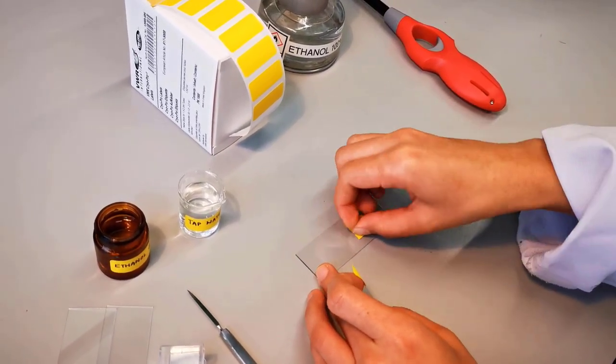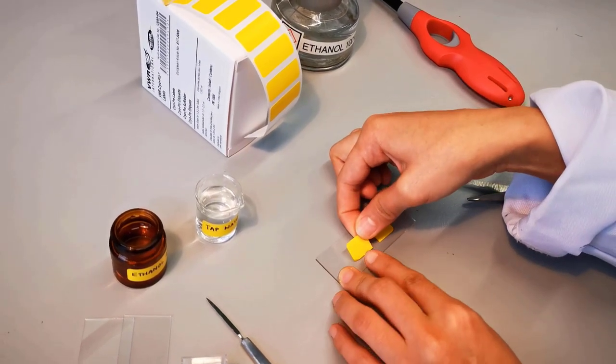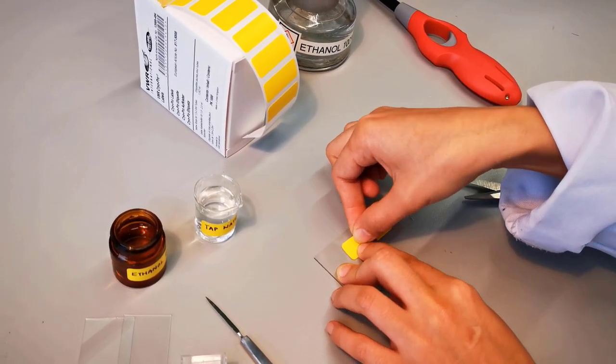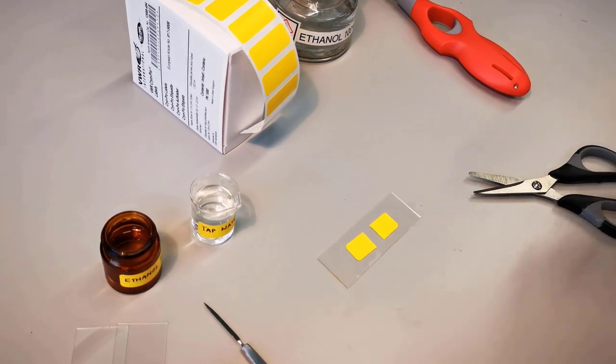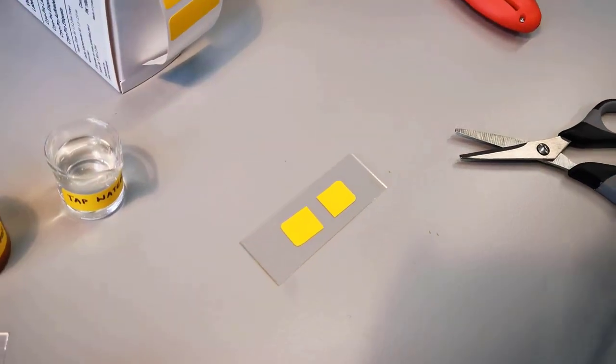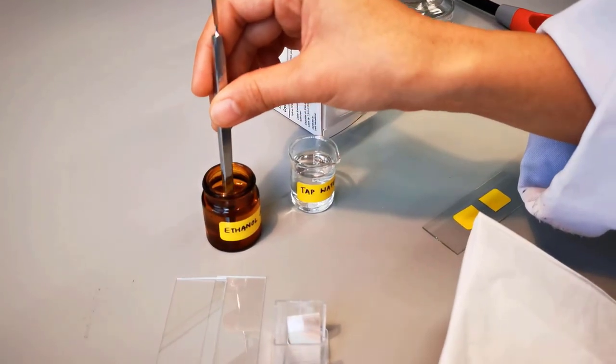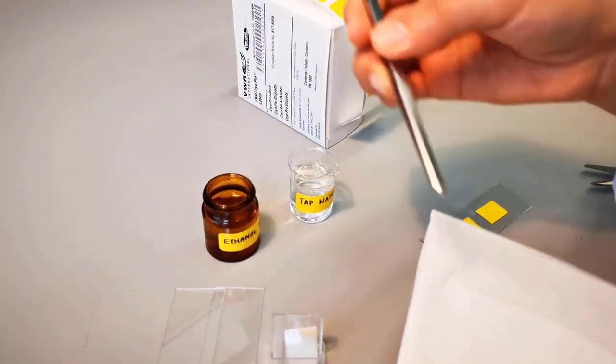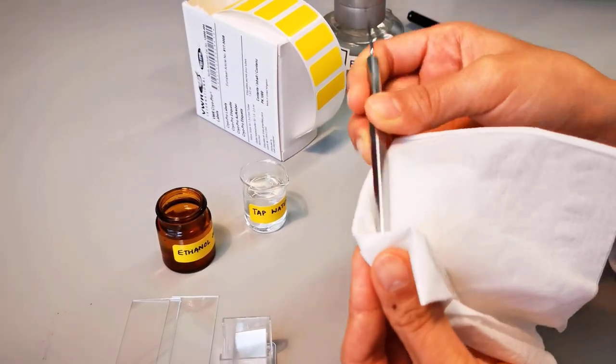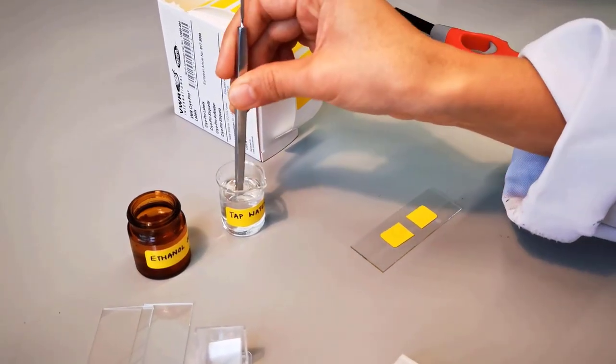Creating a small parallel gap between the two parts as shown. Such stickers are easily available in a lab for routine use. Now transfer a drop of tap water in the middle of the parallel gap created on the glass slide.